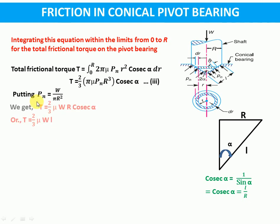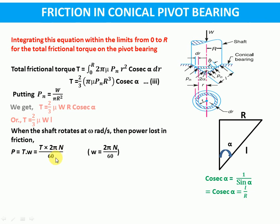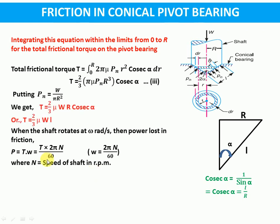Now we get the value of T, that is the total frictional torque. So we can calculate power also. When the shaft is rotating at omega radian per second, then power lost in friction will be T times omega, and omega can be written as 2πN by 60. So power lost in friction will be (2πN/60) times frictional torque, where considering uniform pressure the frictional torque is (2/3)·mu·W·L or (2/3)·mu·W·R·cosecant alpha, and N is the speed of shaft in rpm.